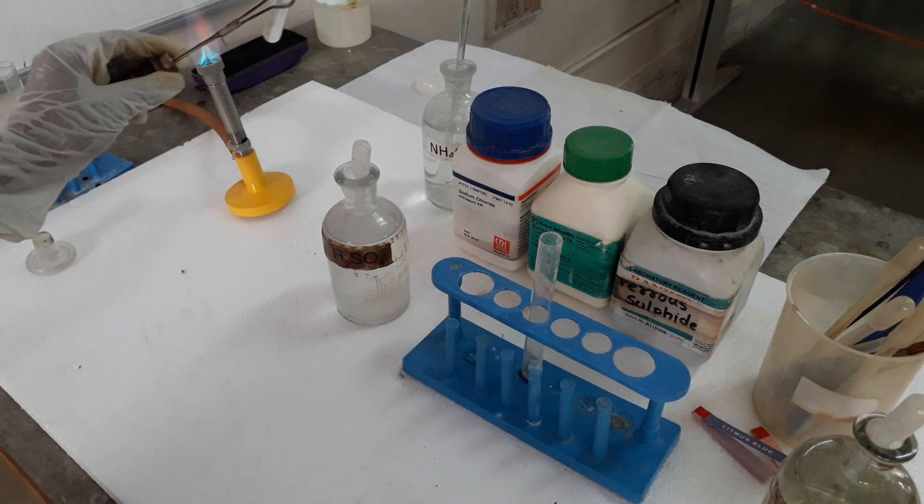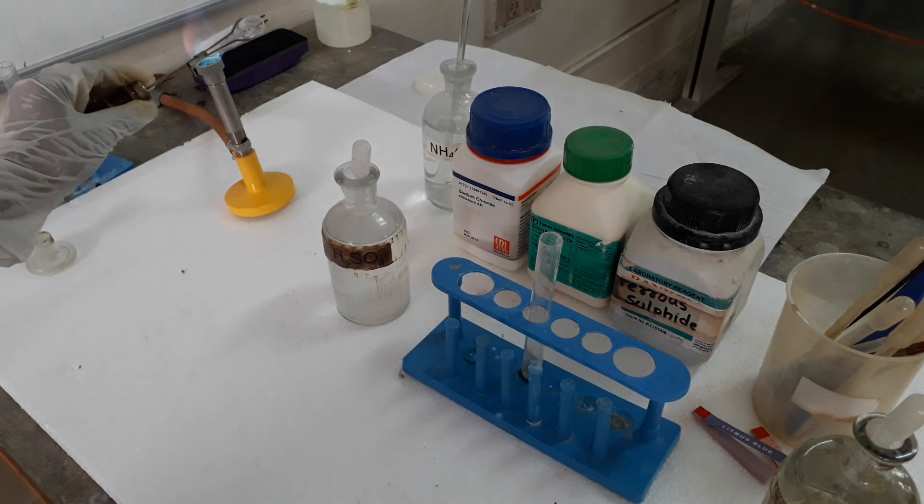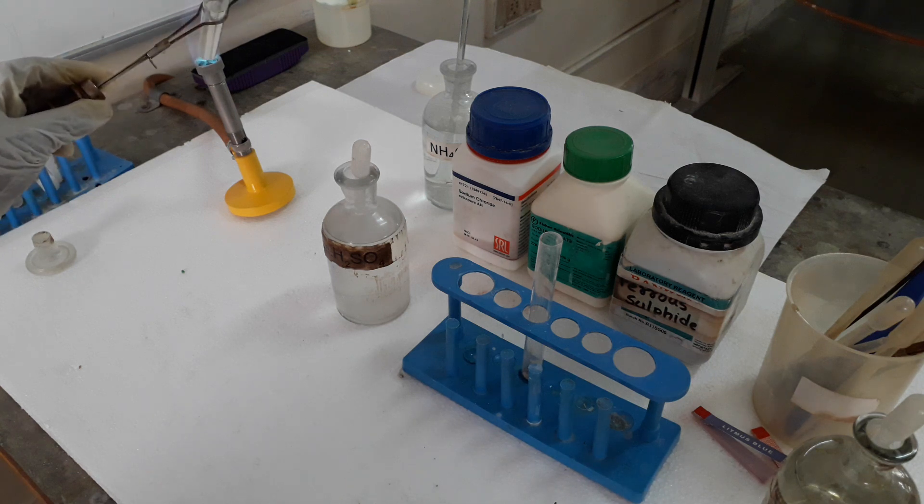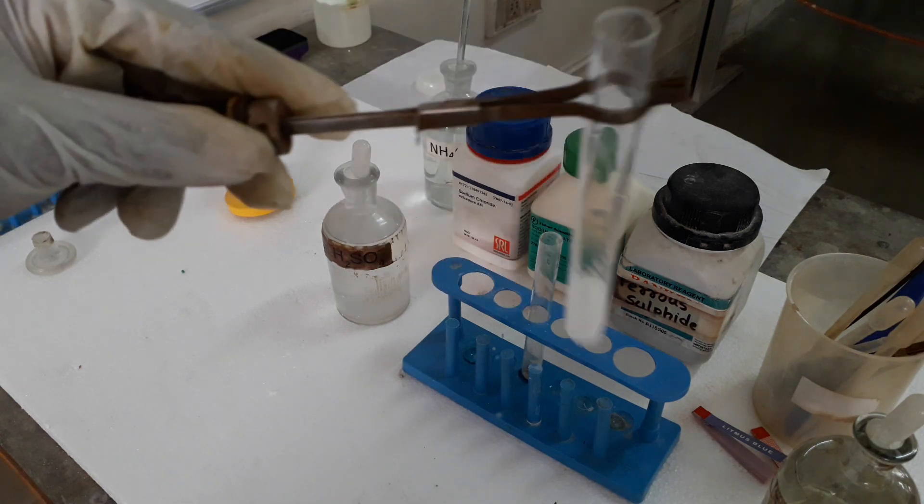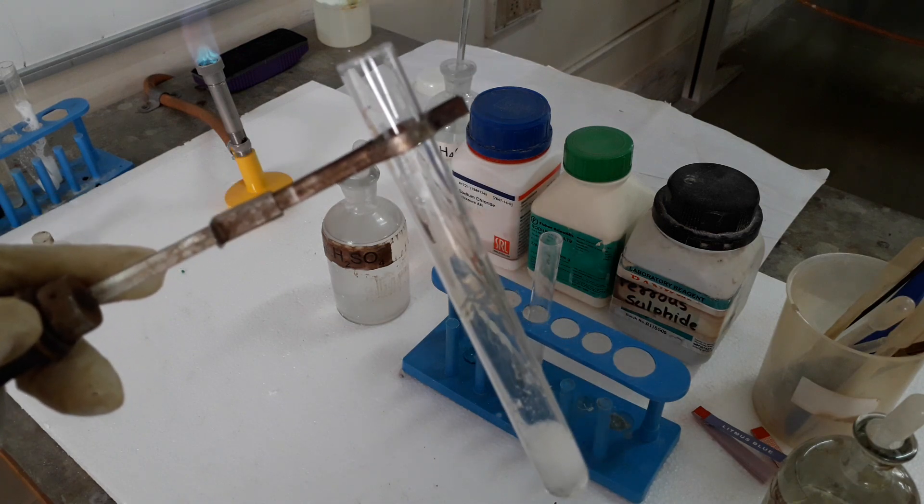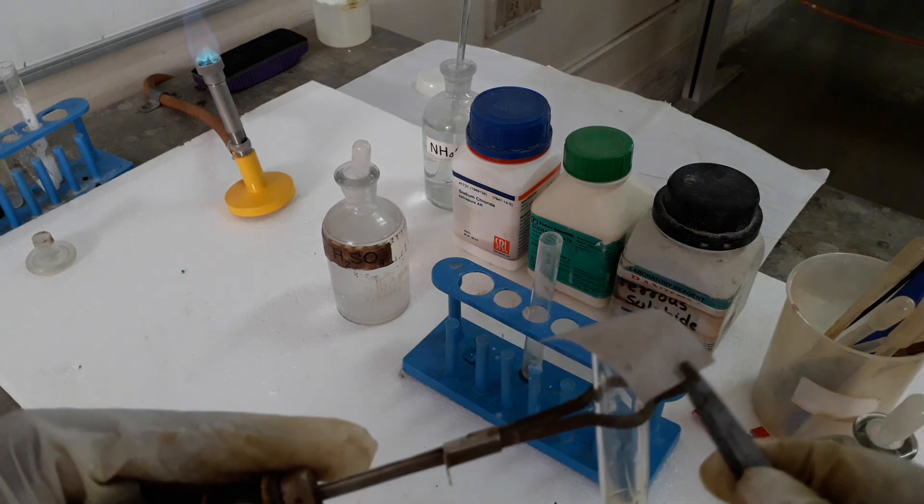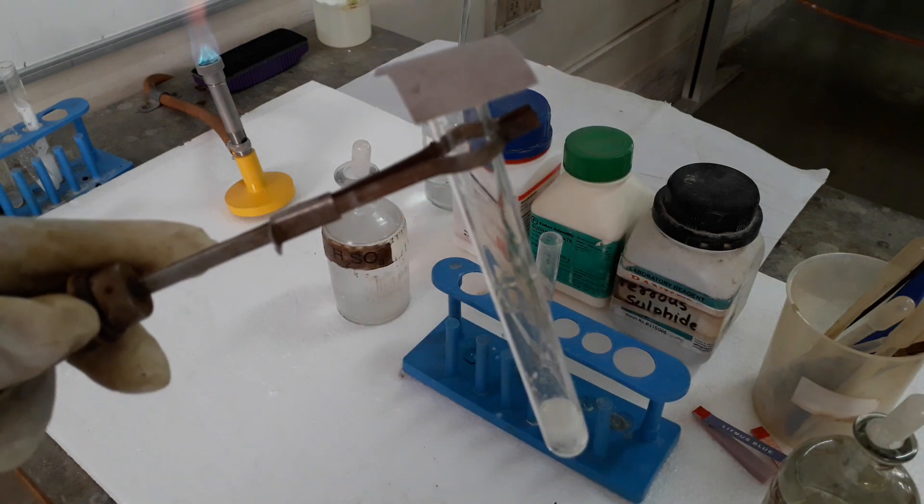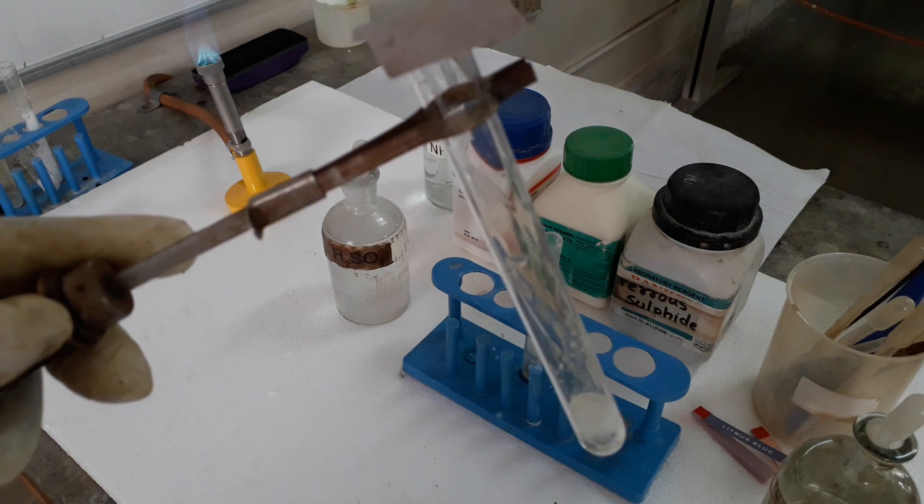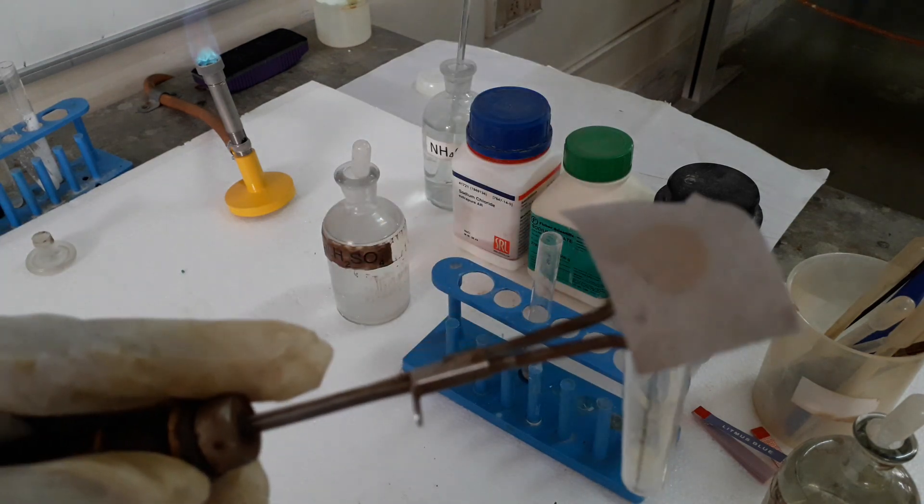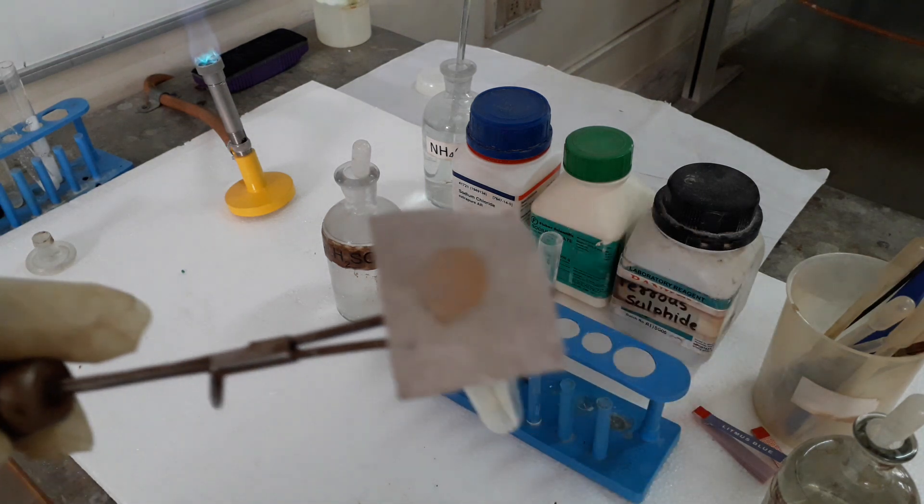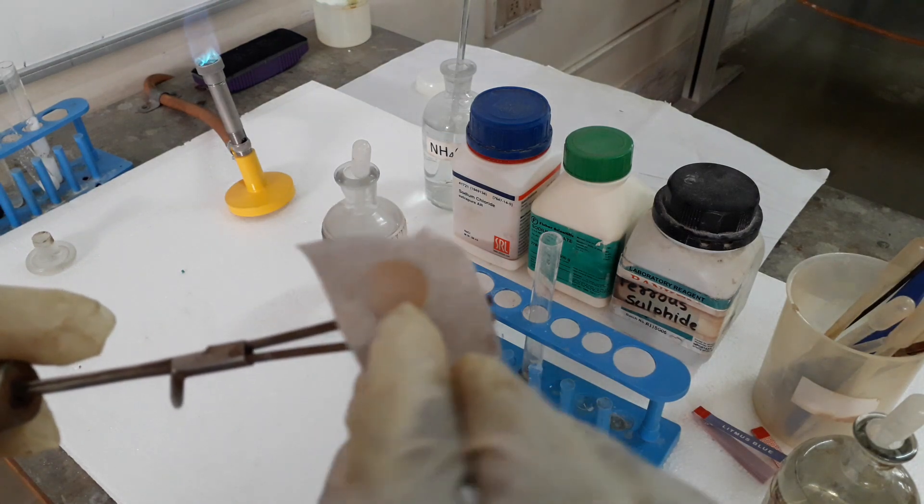We will bring filter paper dipped in KI solution. The potassium iodide solution turns brown. KI paper turns brown. After some time, reddish brown fumes will start coming out. You can see here KI paper has turned brown in the center. Nicely we can see it here, beautifully turning brown.